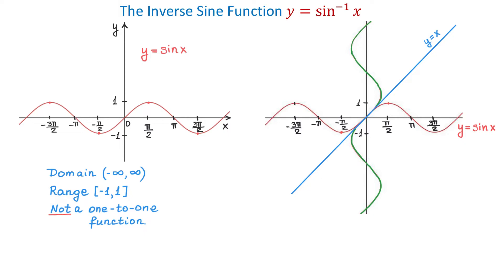The horizontal line test tells us that if we draw a horizontal line over a graph and if this line intersects the graph at more than one point, then this function does not have an inverse function. So on the interval from negative infinity to positive infinity, y equals sine of x does not have an inverse.